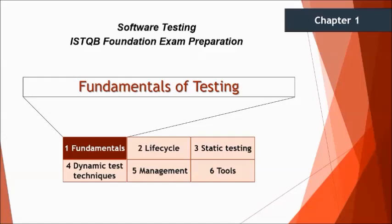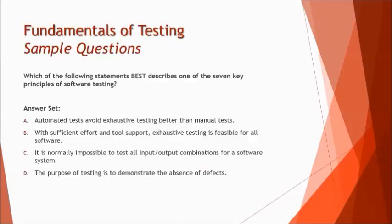The very first question is: which of the following statements best describes one of the seven key principles of software testing? Option A says automated tests can avoid exhaustive testing better than manual tests — we have no such principle about that. Option B says with sufficient effort and tool support, exhaustive testing is feasible for all software. Option C says it is normally impossible to test all input and output combinations for a software system. Option D says the purpose of testing is to demonstrate the absence of defect. The right answer is C, which speaks about the principle of exhaustive testing.